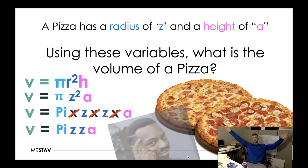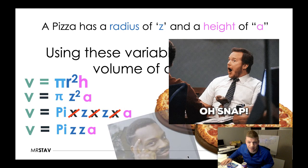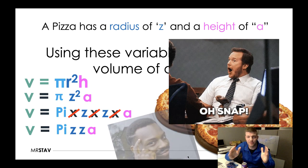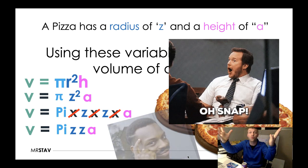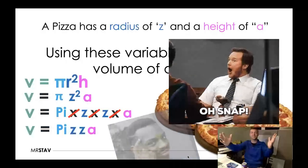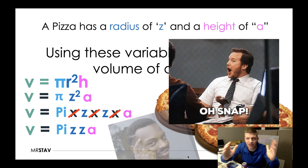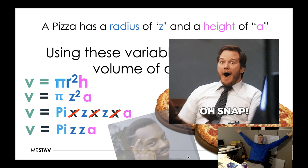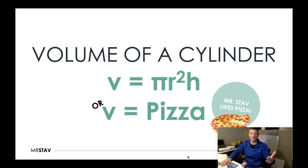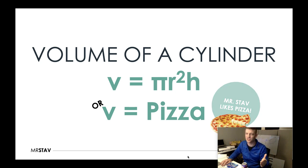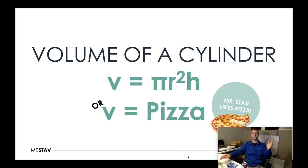The formula for the volume of a pizza is pizza — pi times z times z times a — PIZZA! The volume formula for a cylinder, if you can't remember it, just remember that Mr. Stav likes pizza and you will remember this formula. All year long the riddle was right there: volume equals pizza.